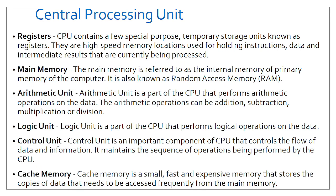Registers are special-purpose temporary storage units — high-speed memory locations used for holding instructions, data, and intermediate results that are currently being processed. Instructions are basically simple things such as clicking a mouse or tapping a keyboard. Main memory, normally referred to as the working area of the computer, is known as RAM or random access memory.